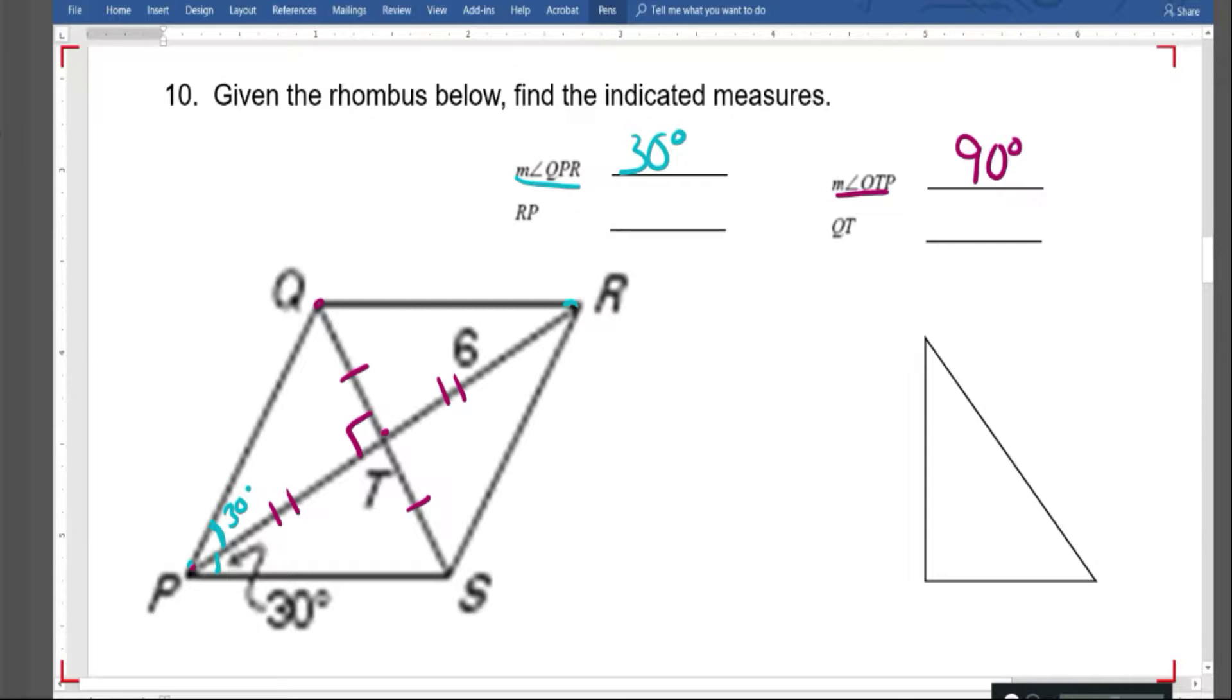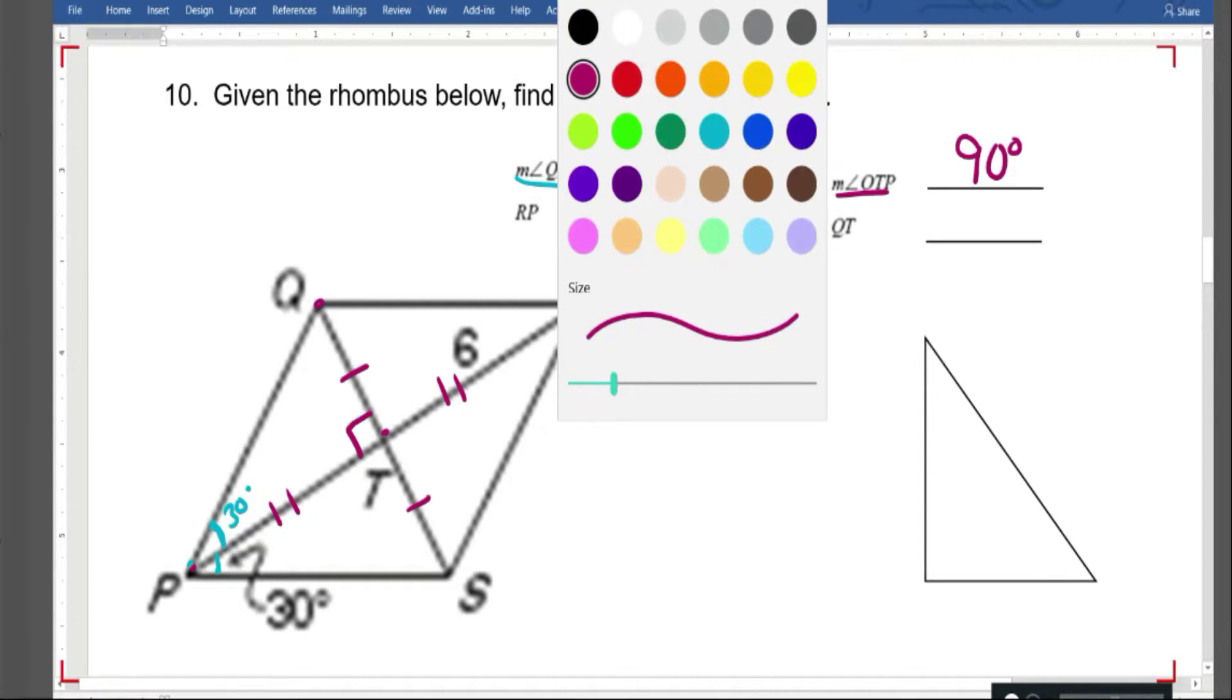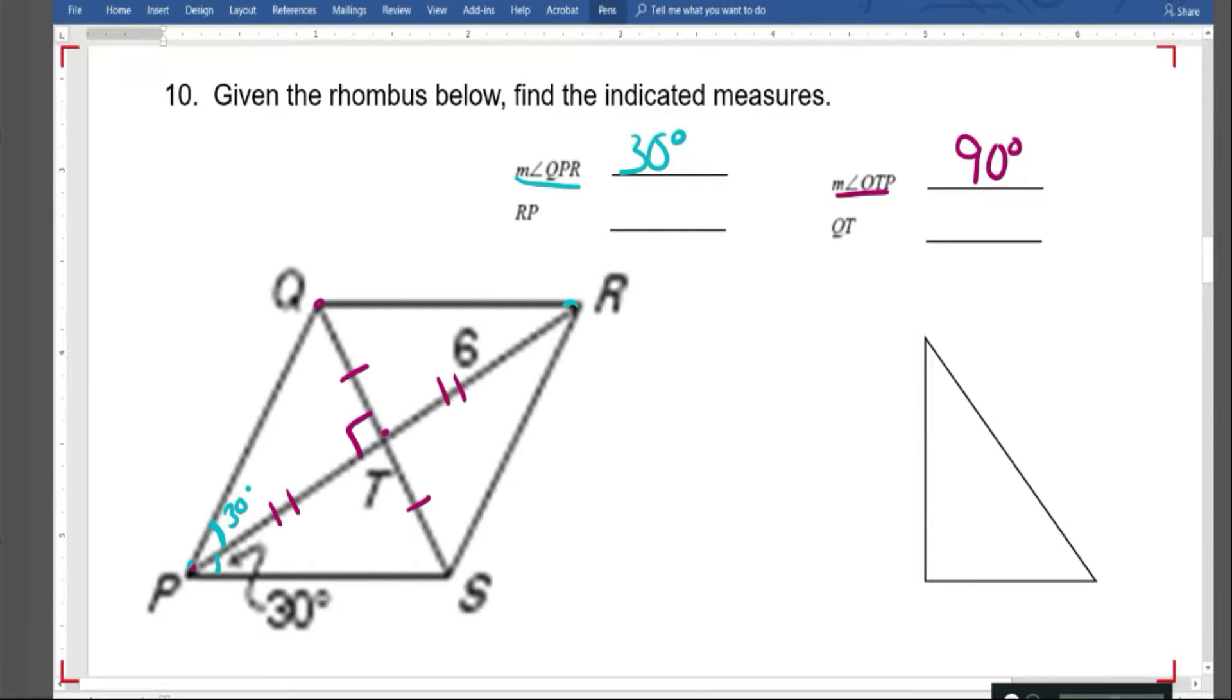But they also cut each other in half. So the next question asks me, RP. RP is this entire diagonal. I know this side is 6. So this side has to be 6. And 6 plus 6 equals 12.